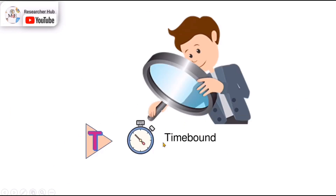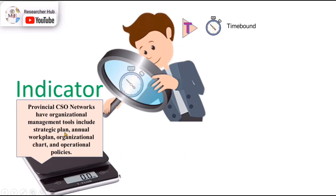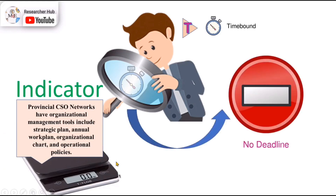The last part is about 'time bound.' Look at the indicator statement — do you see any time phrase? Not at all. There is no time limit here, no time bound for this indicator. We don't know exactly by when the provincial CSO network would have the organizational management tools. Do we want to see this happen by the first year of the project intervention, or by the end? Some projects might set it as after three years of project interventions. Without a time bound, this indicator is not smart — even if everything else is fine, without a time bound it is not smart.